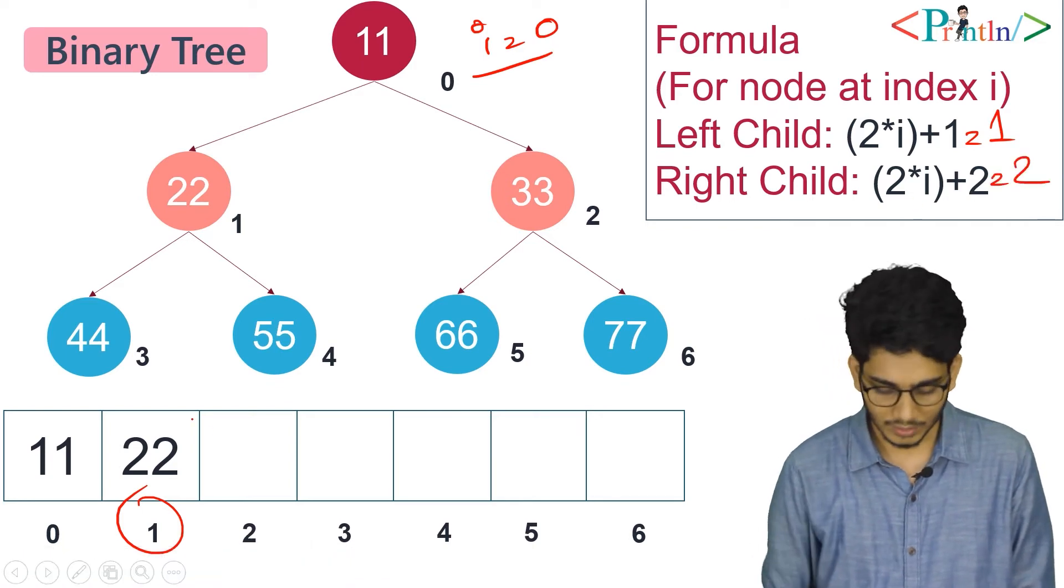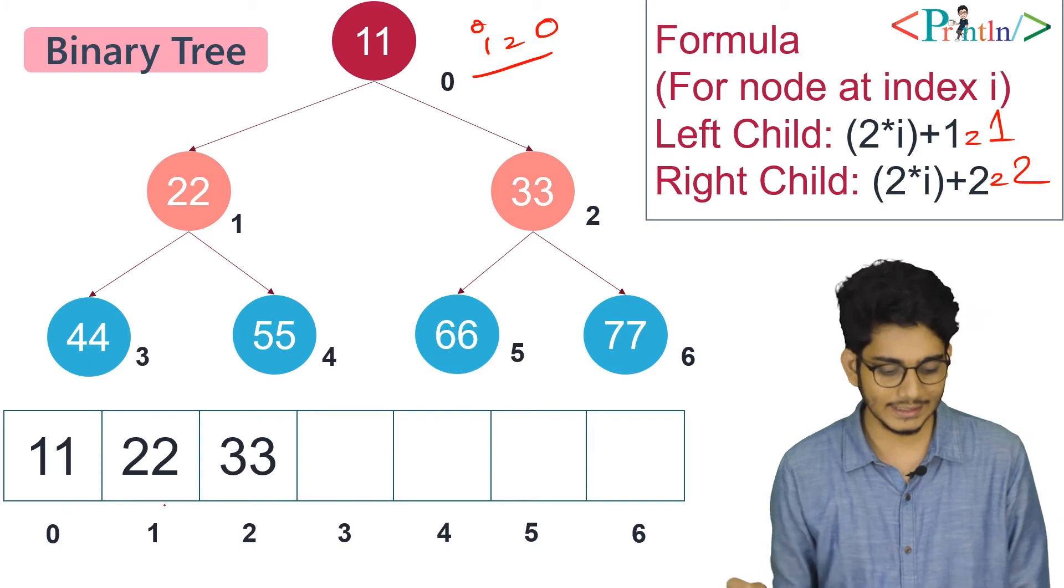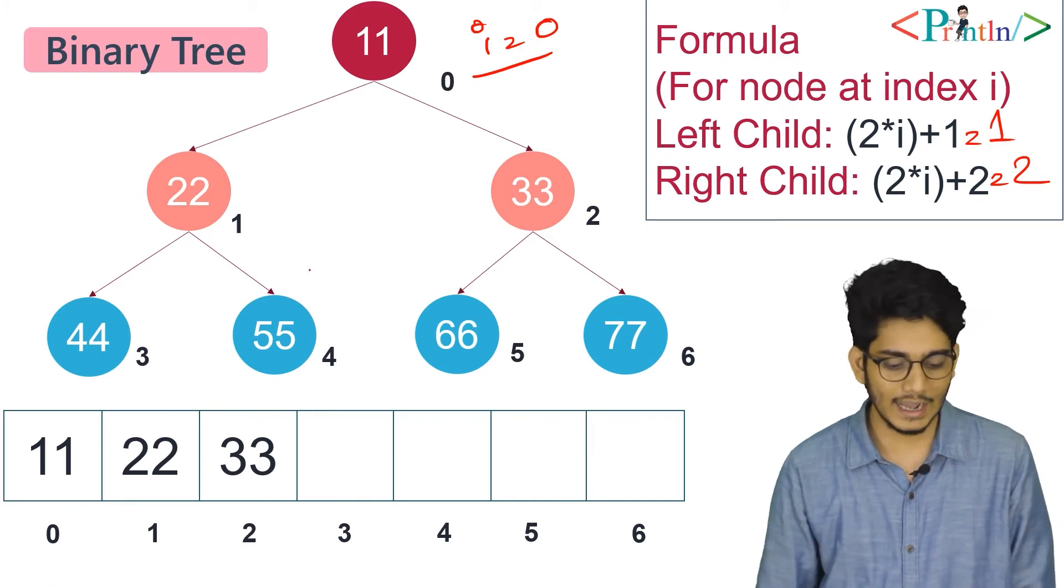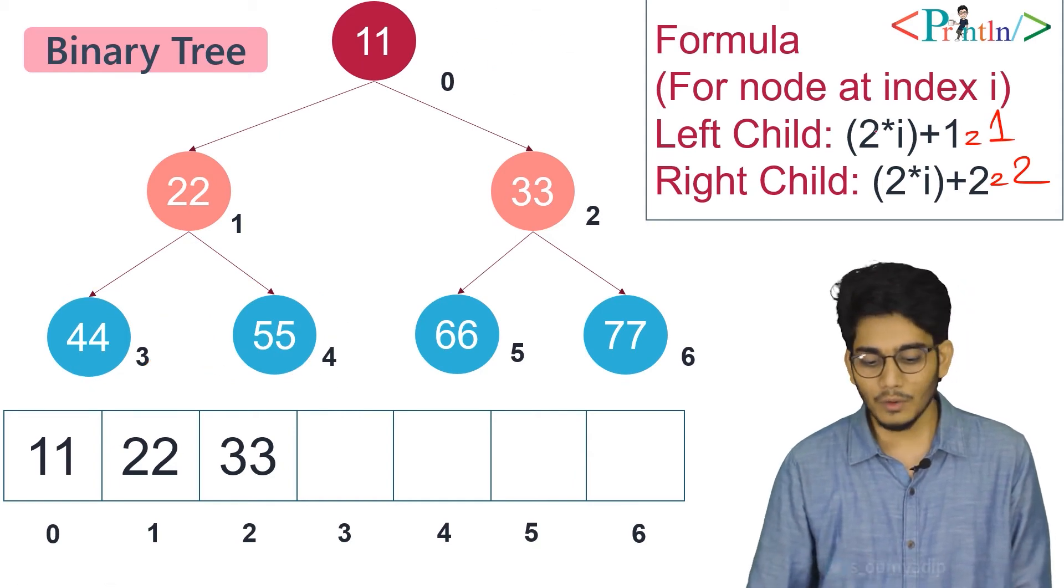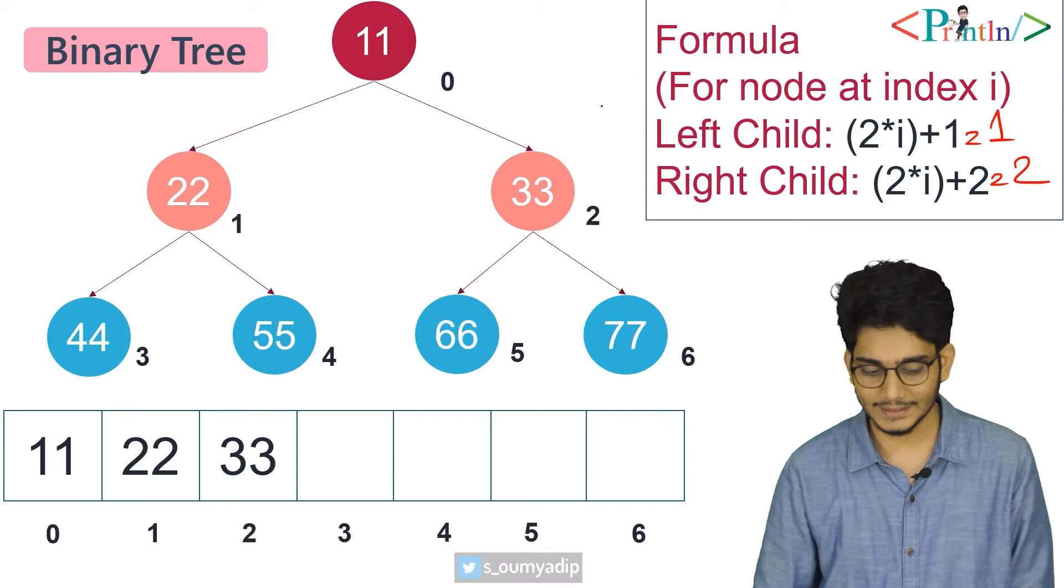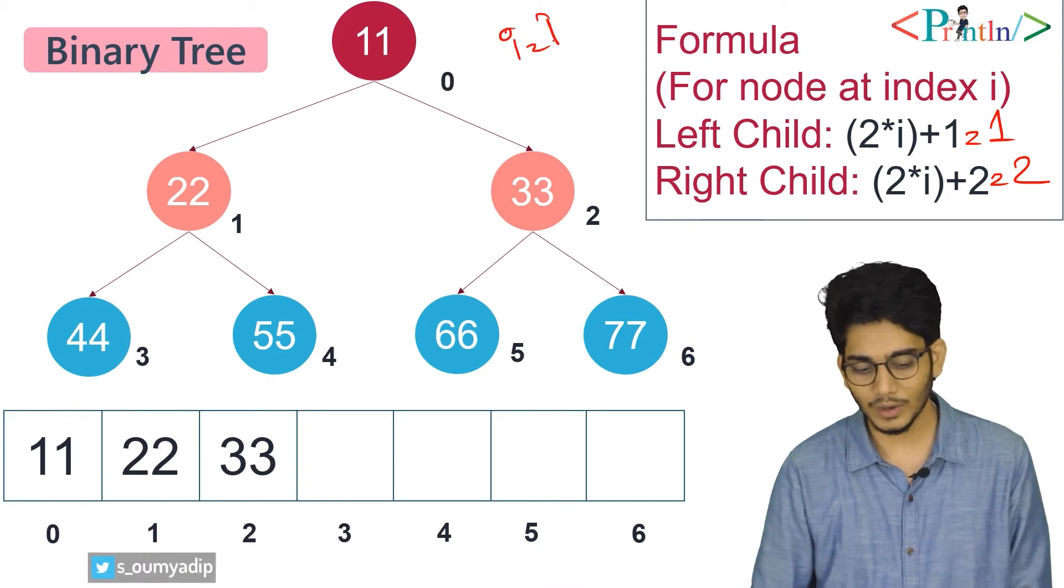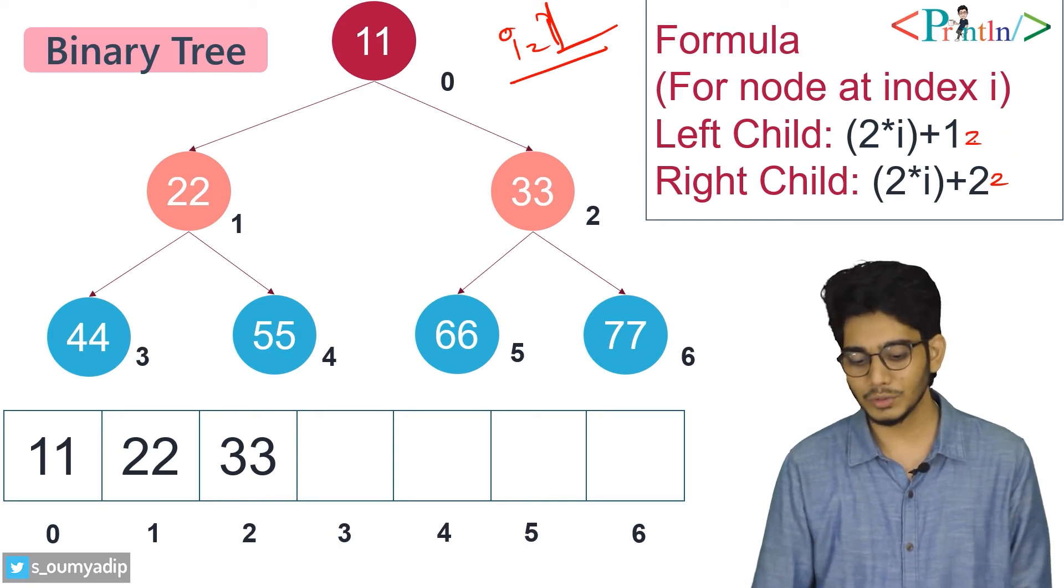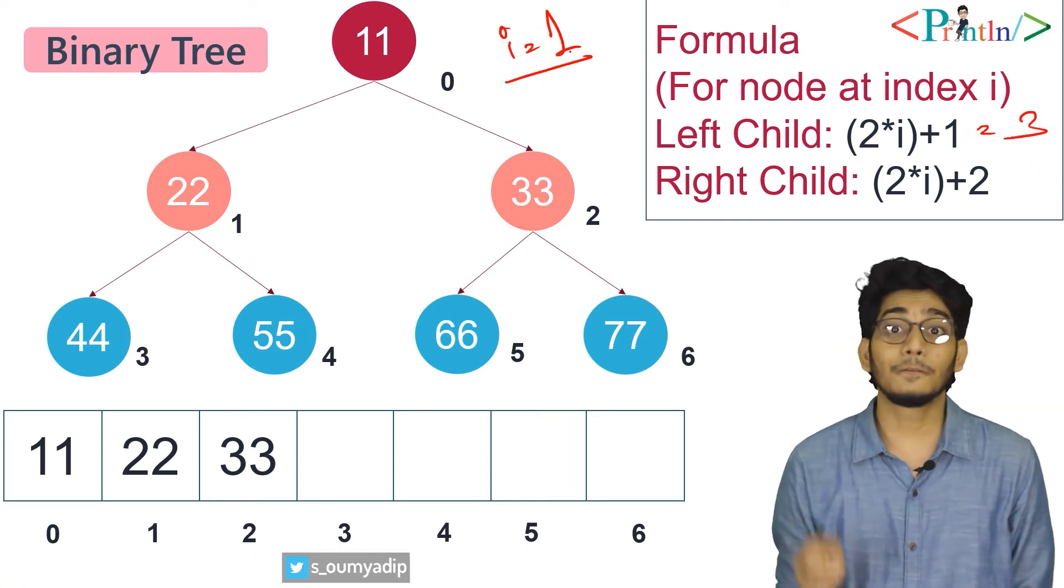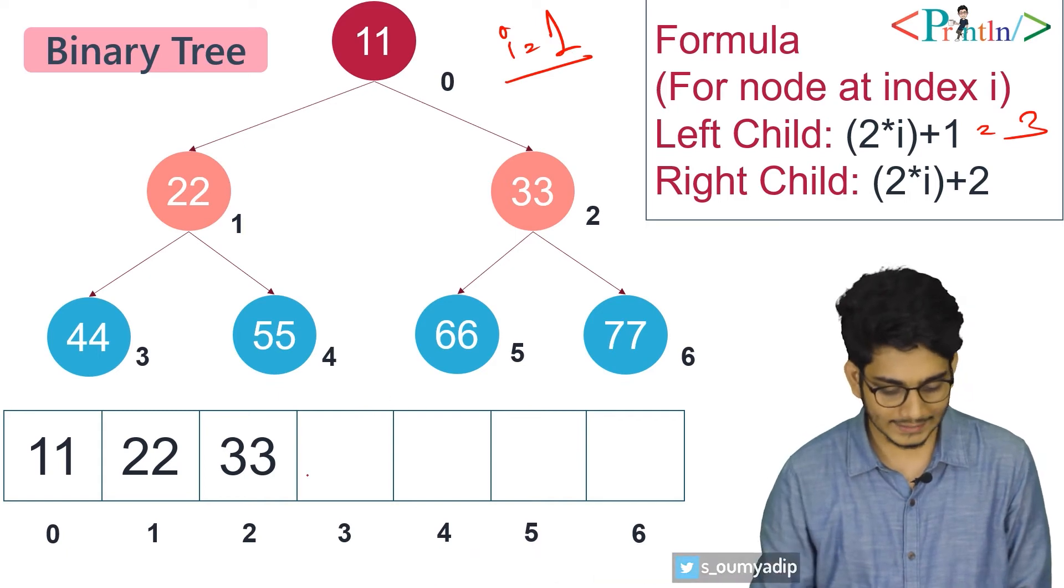Now we'll see how we can insert 44 and 55. For inserting 44, what is the value of its parent? That is i=1. What will be the left child? It will be 1*2 = 2, plus 1 = 3. So 44 will go at index 3.